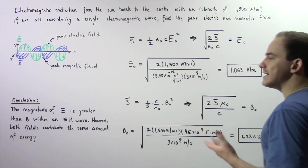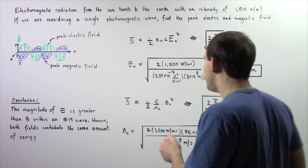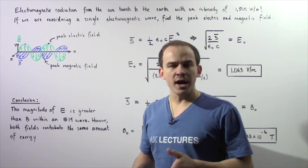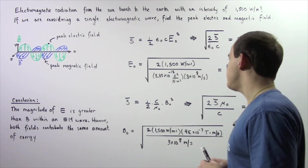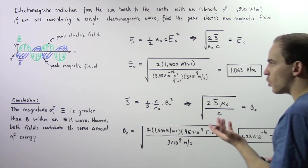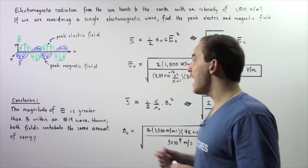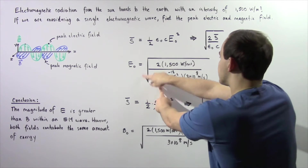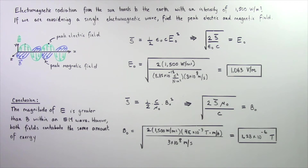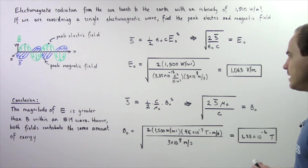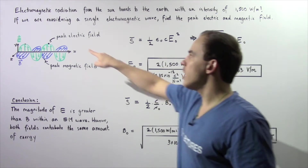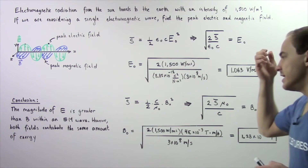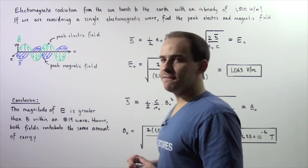Epsilon naught is a constant equal to 8.85 times 10 to the negative 12 coulombs squared divided by newtons multiplied by meters squared. C is also a constant equal to 3 times 10 to the 8 meters per second. We multiply, divide, take the square root, and we get approximately 1,063 volts per meter as the maximum value of the electric field of this electromagnetic wave.